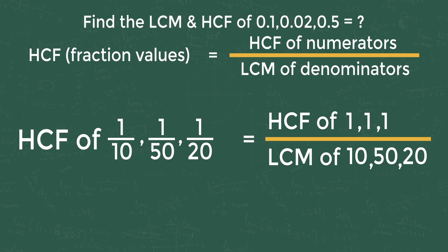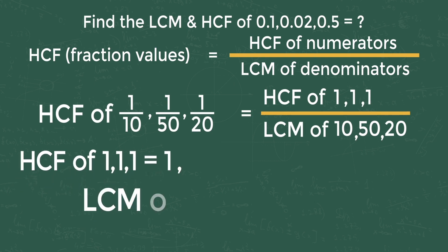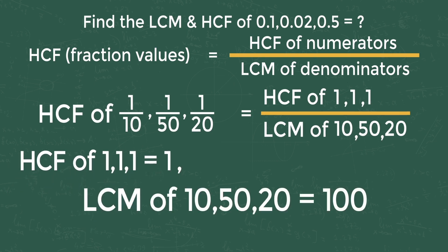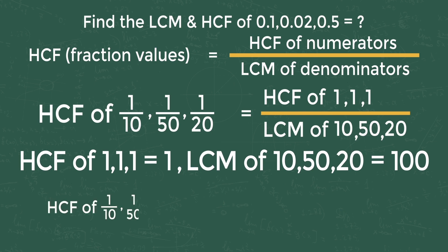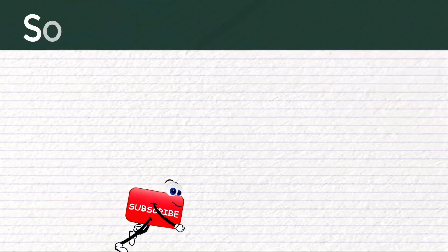If you don't know how to solve LCM and HCF quickly, please watch the previous videos. HCF of 1, 1, 1 is equal to 1. LCM of 10, 50, 20 is equal to 100. So HCF of 1/10, 1/50, 1/20 equals 1/100, that is 0.01. This is simple if you know the trick.